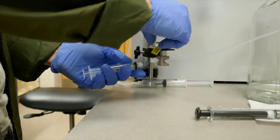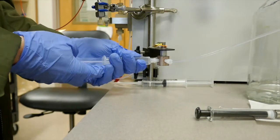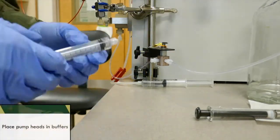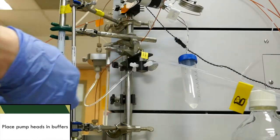You can then place the pump heads in the correct solutions and cover with the solvent containers and tinfoil. The B solution should contain 100% acetonitrile.